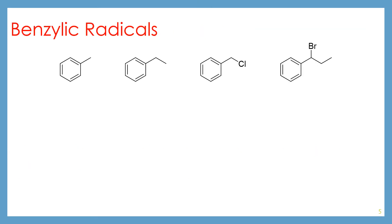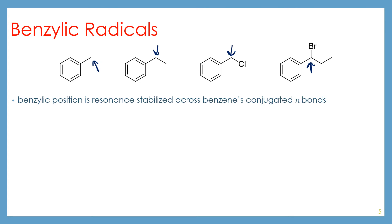Let's talk about benzylic radicals. Benzylic are pretty similar to allylic. When we say benzylic, we mean one carbon removed from a benzene ring — so previously allylic was one removed from an alkene, and benzylic is one removed from benzene. The benzylic position is resonance stabilized across all of benzene's conjugated pi bonds, so this is even more resonance stabilized than the allylic ones. Therefore the benzylic position is extra stable and the most reactive.